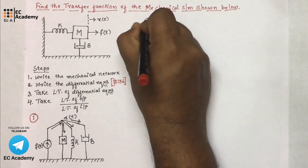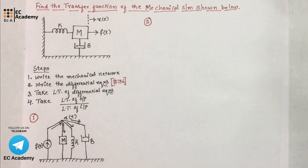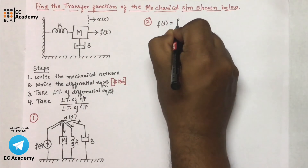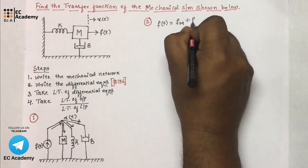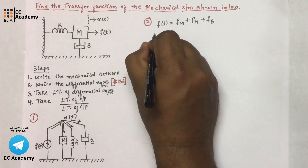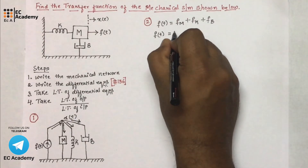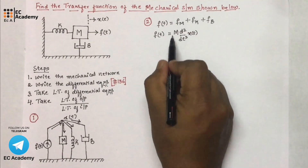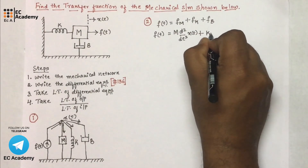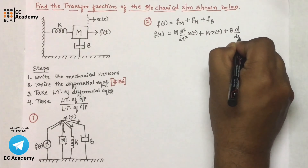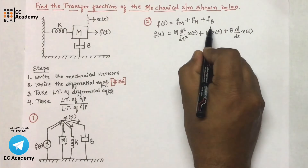The second step is to write the differential equations of the mechanical network. The applied force equals the sum of all opposing forces. So we write: f(t) = m·d²x(t)/dt² + k·x(t) + b·dx(t)/dt. Here, m·d²x(t)/dt² is the differential equation for mass, k·x(t) is for the spring, and b·dx(t)/dt is for the dashpot.